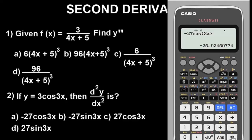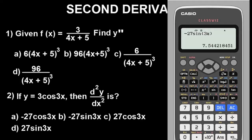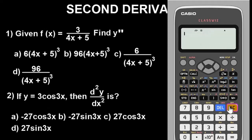Let's check the options. Option A: minus 27 cos(3x) — press Alpha X — and we get minus 25.92. That matches! Let's verify by checking option B: minus 27 sin(3x) — that gives a different value, not matching. Option C is the same expression as A but without the minus sign, giving plus 25.92. So our answer is option A.